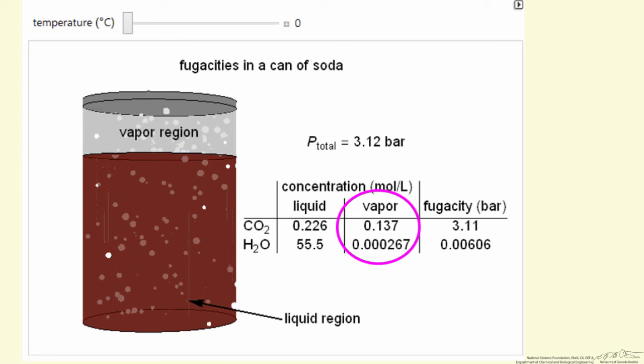Let's look at this simulation briefly to give you an idea. What we're able to do in this simulation is change the temperature and see how this affects the fugacities and the concentrations.